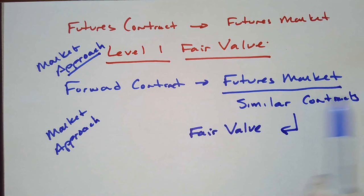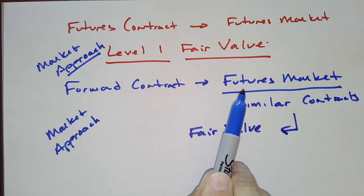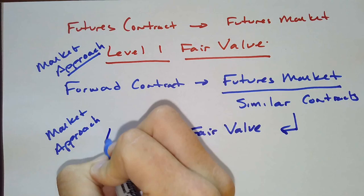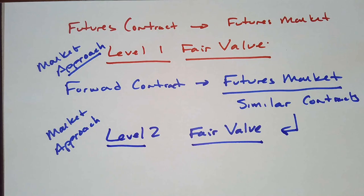Since these are observable inputs by market participants, this market approach is observable inputs. They're not identical assets, right? Only futures to futures can be identical assets in level one. But because they're not identical assets, but they are similar assets to our forward contract, these are going to be level two fair values. That's a very simple way of valuing a forward contract.